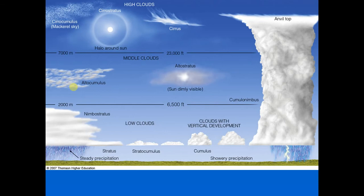Altocumulus clouds can look like little castles and indicate rising air. The appearance of altocumulus on a warm humid summer morning — such as in the Midwest, Gulf Coast, East Coast, or even the desert Southwest during monsoon season — can portend thunderstorms by later afternoon.